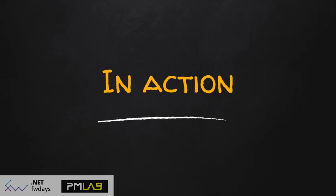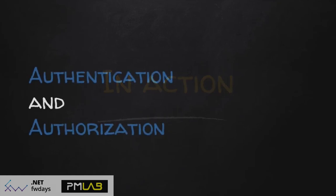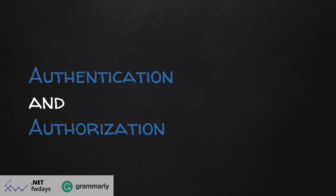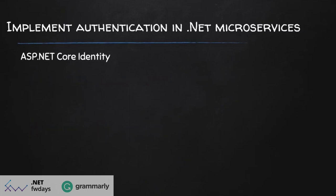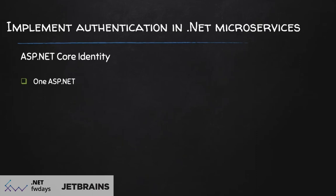Let me start with authentication and authorization. To set everyone on the same page: authentication is about identifying who you are, and authorization is about what you can do and what you can access. In .NET Core, ASP.NET Core Identity is the king, if I may say so. The key benefits of using it: it follows the One ASP.NET approach introduced around 2013, meaning it can be used across all ASP.NET frameworks — MVC, Web Forms, Web API, and SignalR.